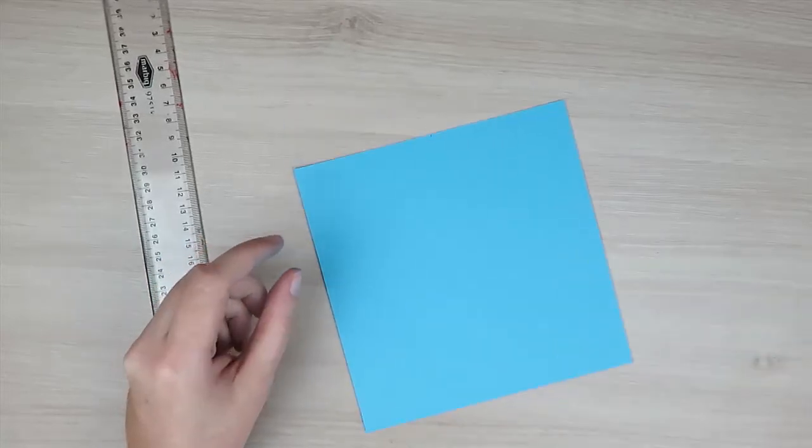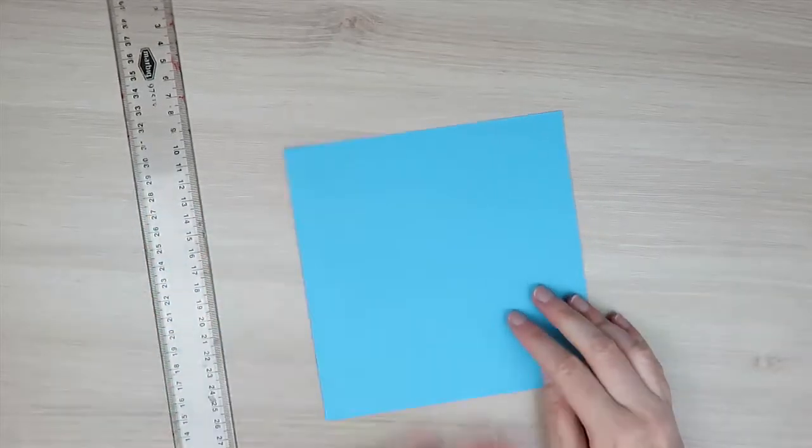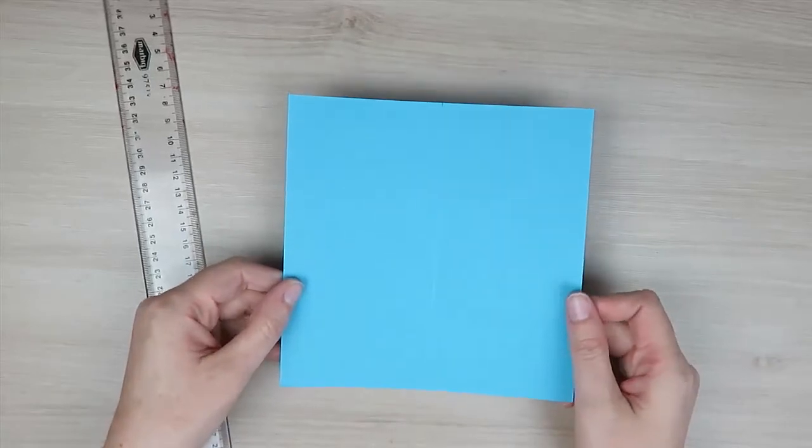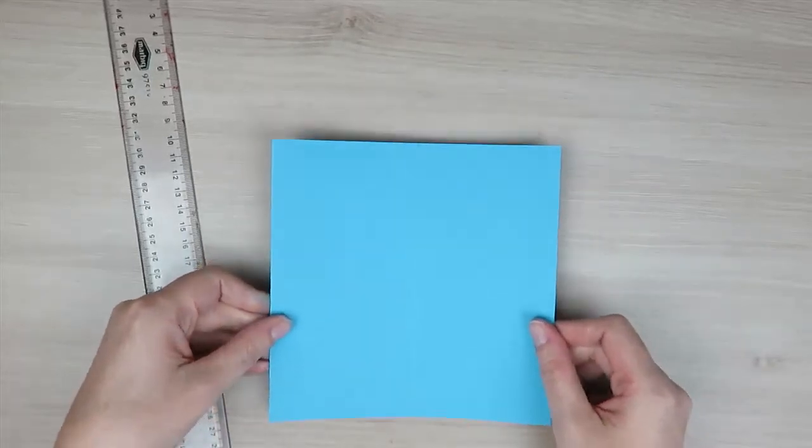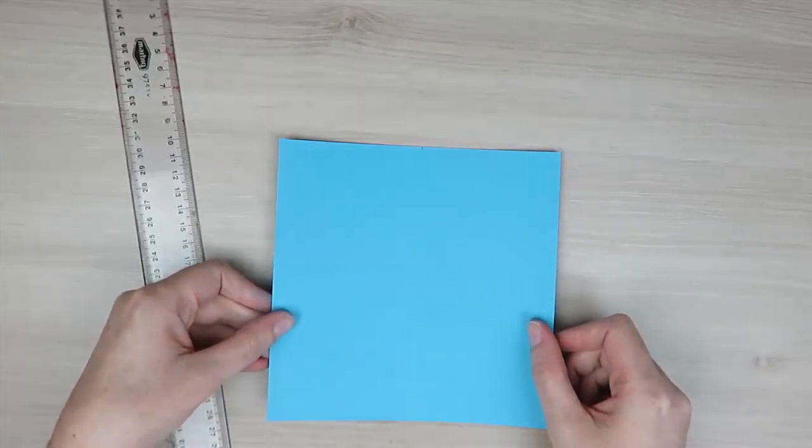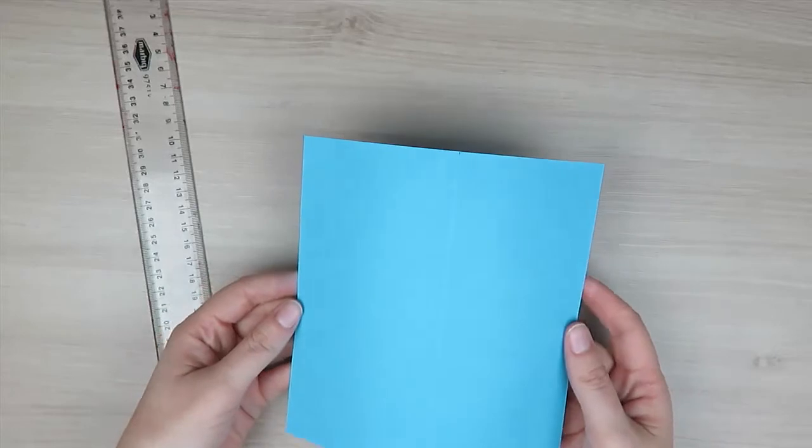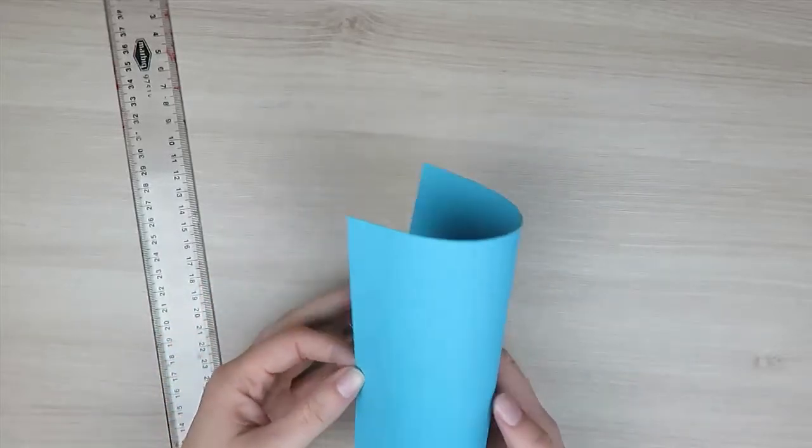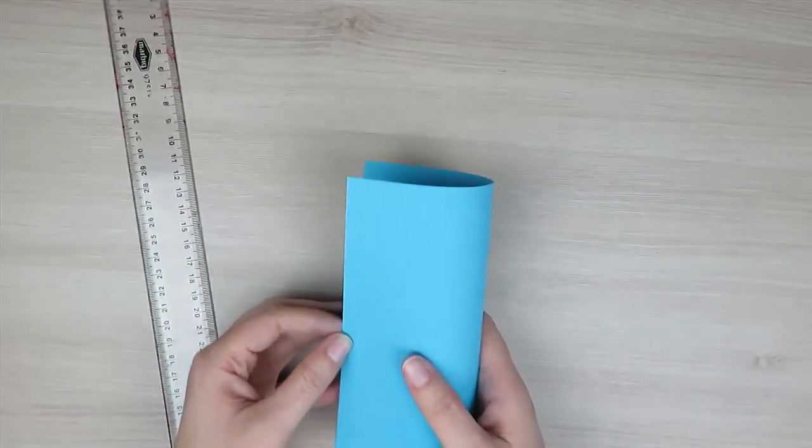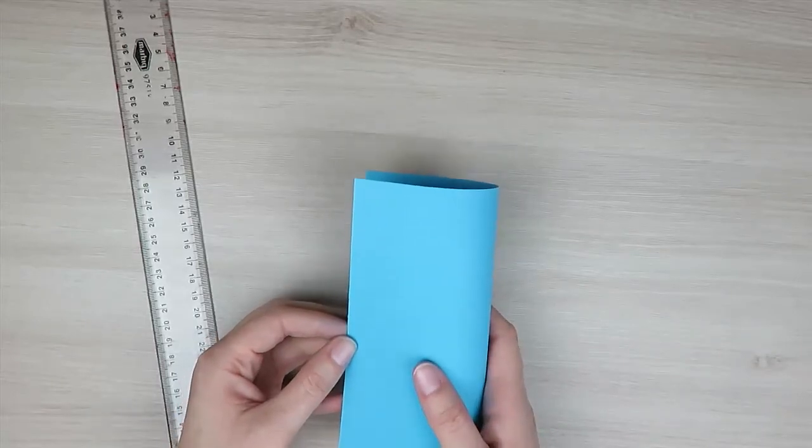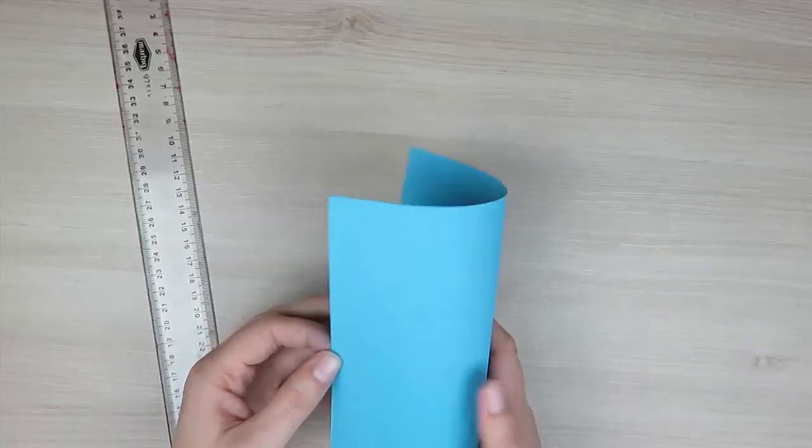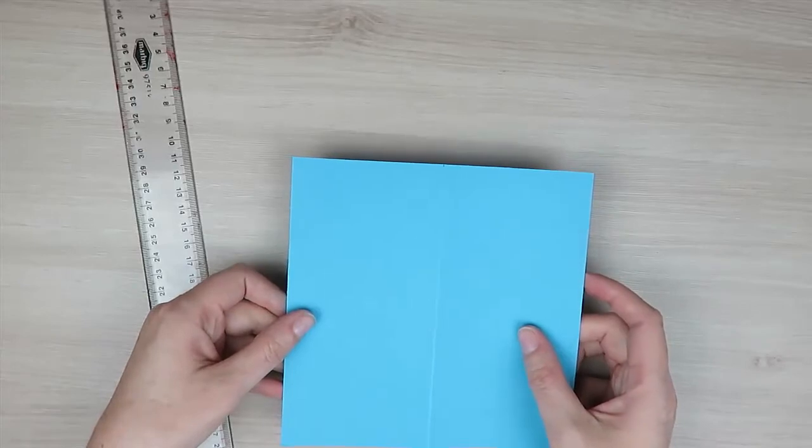And then you can come in with an eraser and erase those pencil marks that you have on your card there. And just so you know, once you've created your score line, when you go to fold your card you want to fold away from that valley. So you're going to fold it away this way and then go ahead and burnish your card in order to create that nice crisp fold. And in another video I'll show you how to do that burnishing with your bone folder.